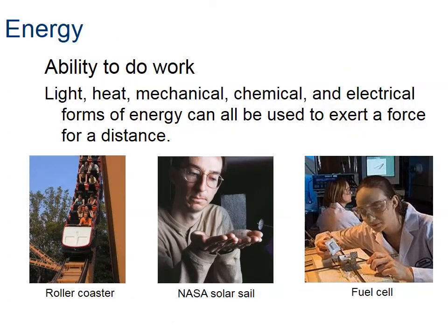So let's refresh our memory just a little bit on energy. And we said at the beginning that energy, the definition is the ability to do work. And so what we see here, we see a roller coaster and a solar cell, solar sail, and a fuel cell. And within there, we see different kinds of energy. So for example, light, heat, mechanical, chemical, and electrical are all different forms of energy. So let's take a look at a couple of those forms now.